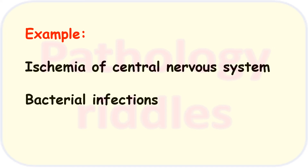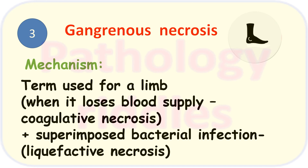Gangrenous necrosis is basically a combination of two types of necrosis: coagulative and liquefactive. It is used usually in cases of a limb — when the limb loses its blood supply, it undergoes coagulative necrosis, and if there is a superimposed bacterial infection, then liquefactive necrosis is also present.